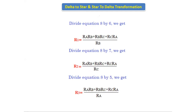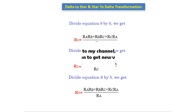Like this we get the delta-to-star and star-to-delta transformation equations. To find the star-to-delta transformation, we first need to know the delta-to-star equations. While watching this video, please take a book and write down all the equations so you can understand easily. This is about the star-to-delta transformation; in the next class we will discuss more.